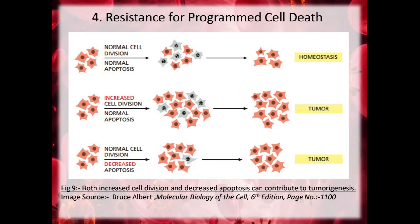The next property is resistance to programmed cell death. Cancer cells are not affected by apoptosis; because of their increased cell division, apoptosis gets decreased. The failure of cancer cells to undergo normal programmed cell death contributes substantially to tumour development. In a normal cell division with normal apoptosis, homeostasis is maintained. But if there is increased cell division with normal apoptosis, or normal cell division with decreased apoptosis, both cases lead to tumour formation.